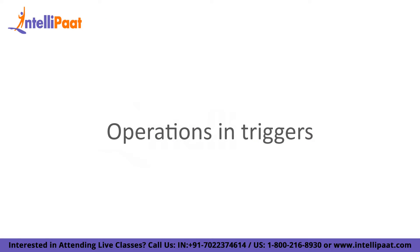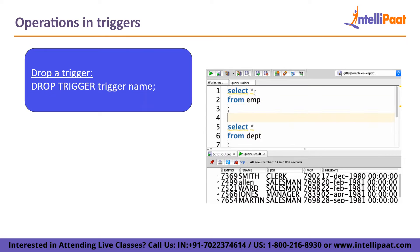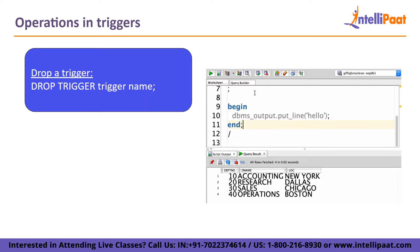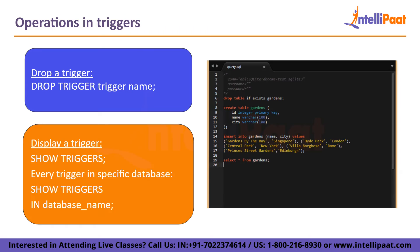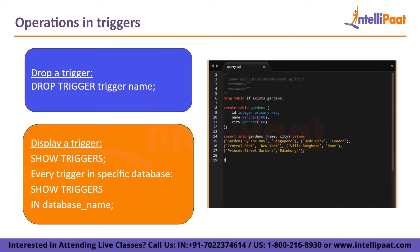Operations on triggers: triggers allow us to carry out a wide variety of tasks, some straightforward and some more complicated. To drop a trigger, the syntax is DROP TRIGGER followed by the trigger name. To display triggers, the command SHOW TRIGGERS will list every trigger that is active, while SHOW TRIGGERS IN database_name will list every trigger present in a specific database.